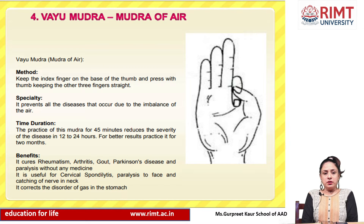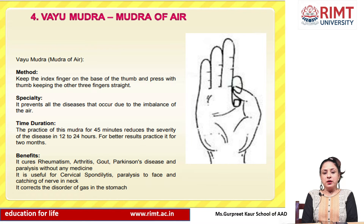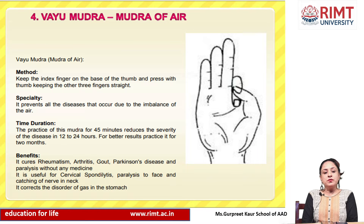Fourth is Vayu Mudra, also called the Mudra of Air. Method: keep the index finger on the base of the thumb and press with the thumb, keeping the other three fingers straight. Specialty: it prevents all diseases that occur due to imbalance of air. Time duration: practicing this Mudra for 45 minutes reduces the severity of the disease in 12 to 24 hours; for better results, practice it for two months. Benefits: it cures rheumatism, arthritis, gout, Parkinson's disease, and paralysis without any medicine. It is useful for cervical spondylitis, facial paralysis, and catching of nerves in the neck. It also corrects disorders of gas in the stomach.